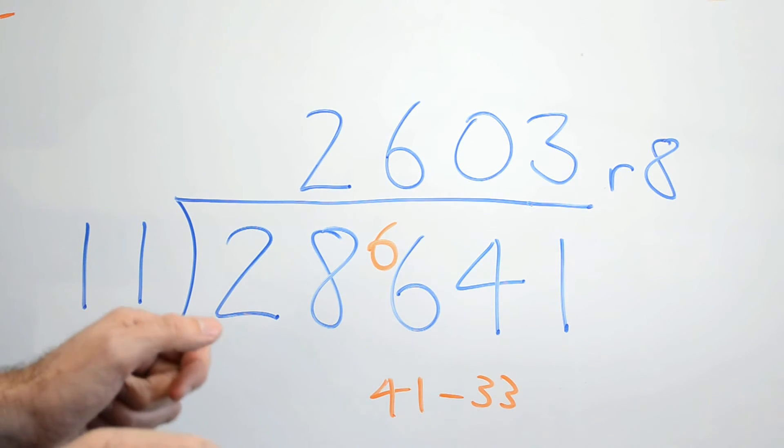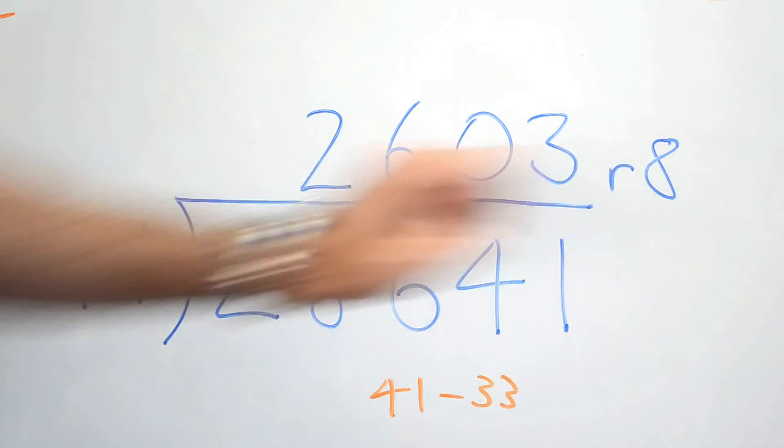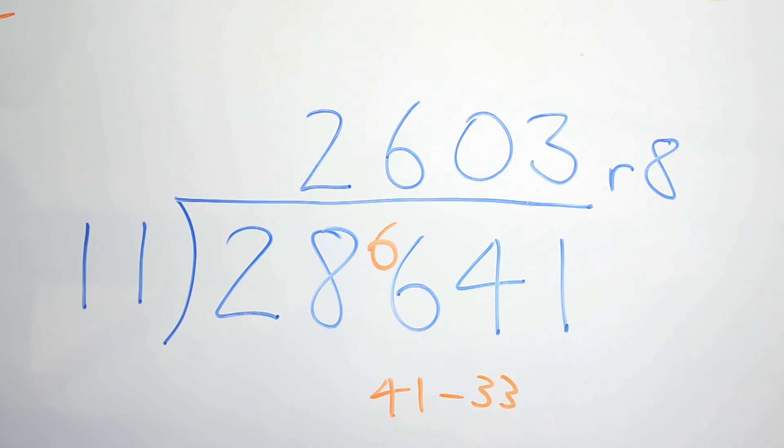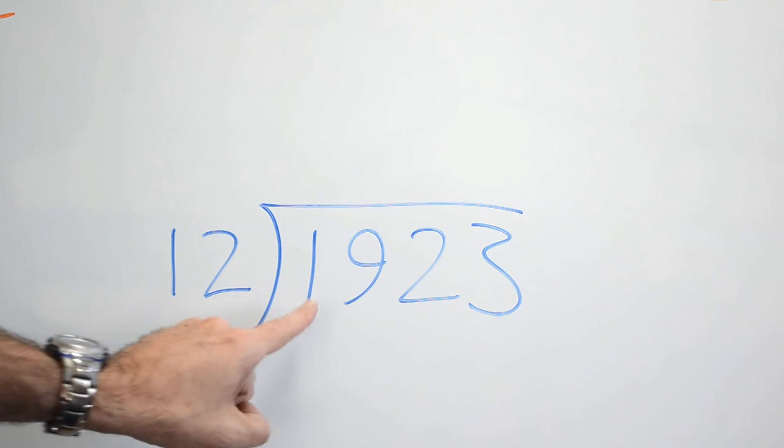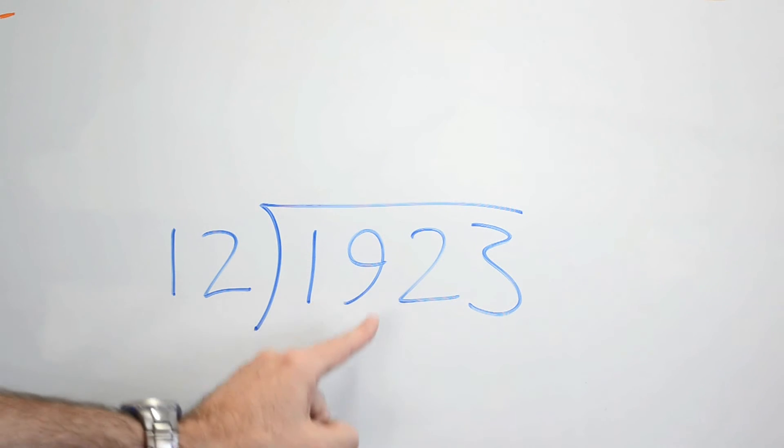Our remainder is 8. We can actually figure out how to turn that into a decimal number, but that's going to be another whole lesson. We'll do a different time. Right then, shall we try something in the 12s? Yeah. Okay, we've got a new number. This time it's 1,000. You can say it. 1,923. Good. And we're going to divide it by 12.